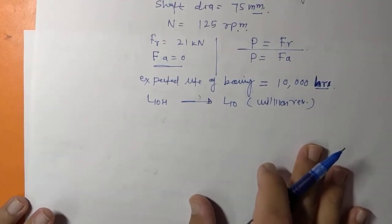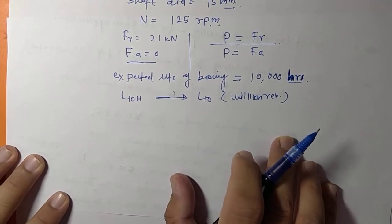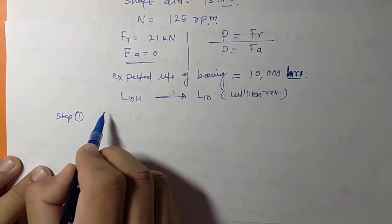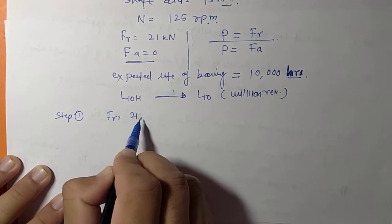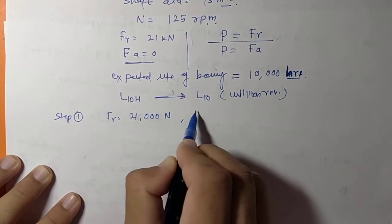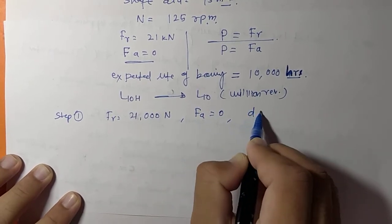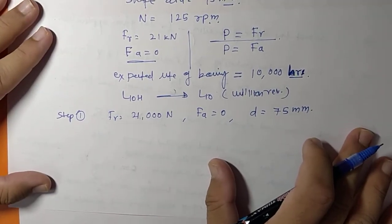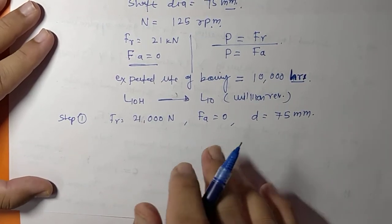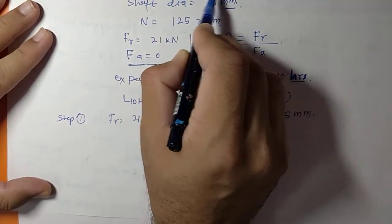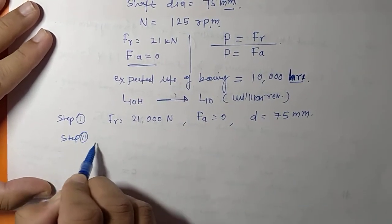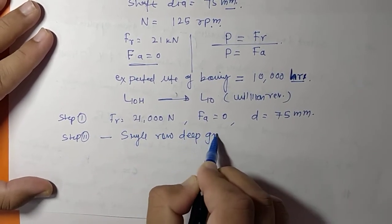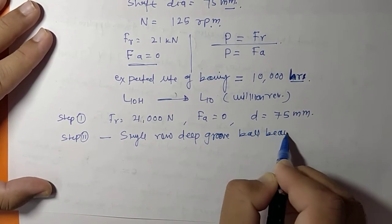Now applying the procedure step by step: Step 1 — FR = 21,000 N, FA = 0, diameter = 75 mm. Step 2 — the bearing type is specified as a single row deep groove ball bearing. Otherwise, we would choose based on the application.